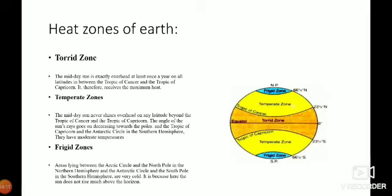There are three important heat zones of the earth. These three heat zones are torrid zone, temperate zone, and frigid zone which is shown in the diagram.